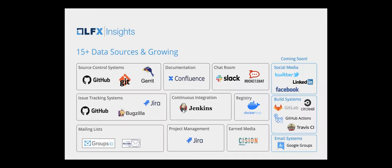Today we support around 15 data sources and it's growing — by next quarter we'll be around 18 or 19. These include source control systems like GitHub and GitLab; issue tracking via Bugzilla, GitHub Issues, or Jira; collaboration via groups.io or Mailman mailing lists; CI via Jenkins; registries via Docker Hub; media including press releases and content syndication with SEO tracking; documentation via Confluence; and chat rooms starting with Slack and expanding to Rocket Chat.